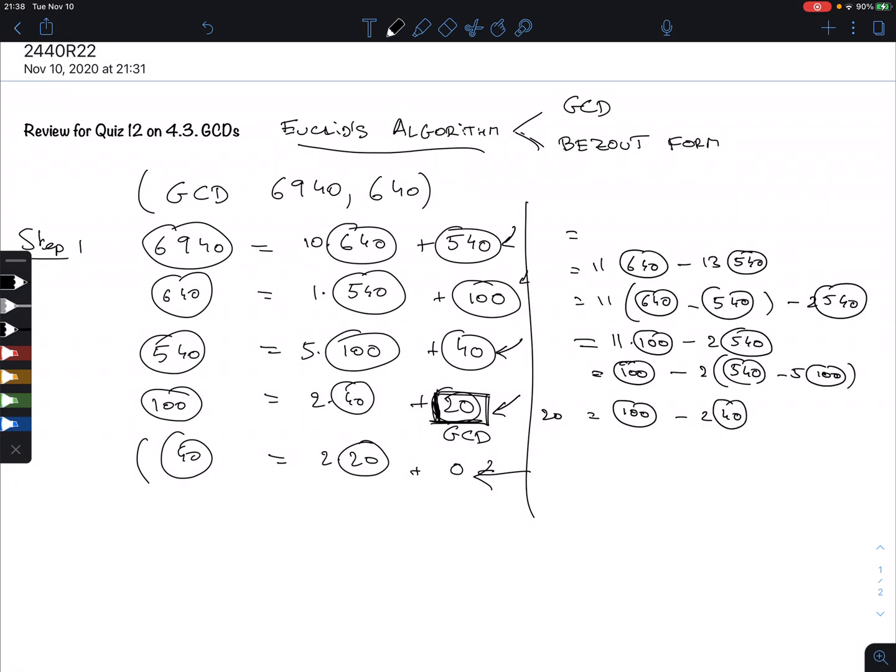Finally, we have this 540 that we can now replace. That is 11 times 640 minus 13 times 6940 minus 10 times 640. If we combine all this, we have 11 in front of 640 and in the back we have 130, so 141 times 640 minus 13 times 6940. This is equal to 20. We can always check this. 141 times 640 is 90240 and 13 times 6940 is 90220, so the difference is exactly 20 as predicted.